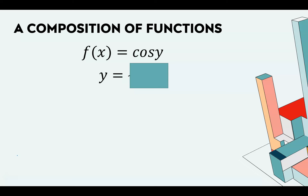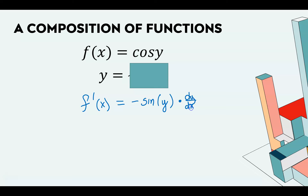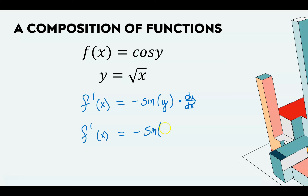The idea of implicit differentiation: suppose cosine has an input of y — some function hiding behind a box. The derivative of cosine of something is negative sine of that same something, and that something is y. Since I don't know what y is, I multiply by the derivative of y, writing that symbol dy/dx. If I did know — say it was the square root of x — I would write the derivative of the square root of x, which is 1 over (2 times the square root of x).